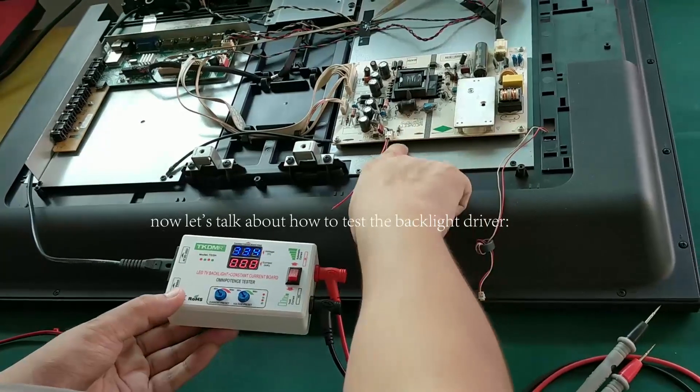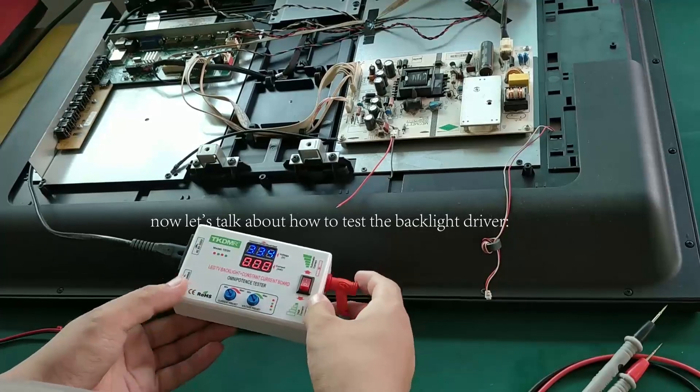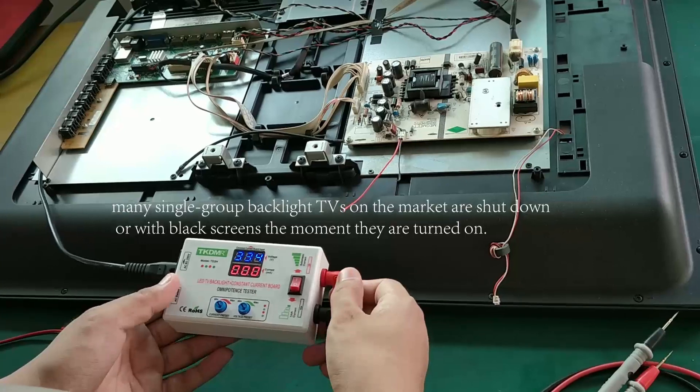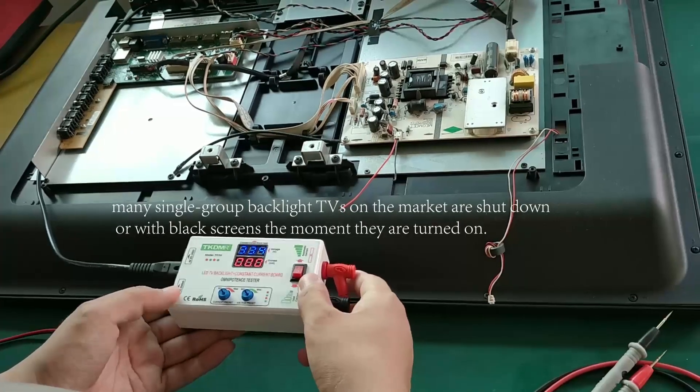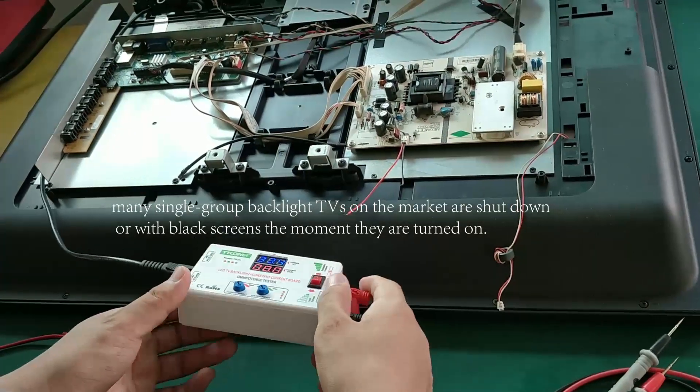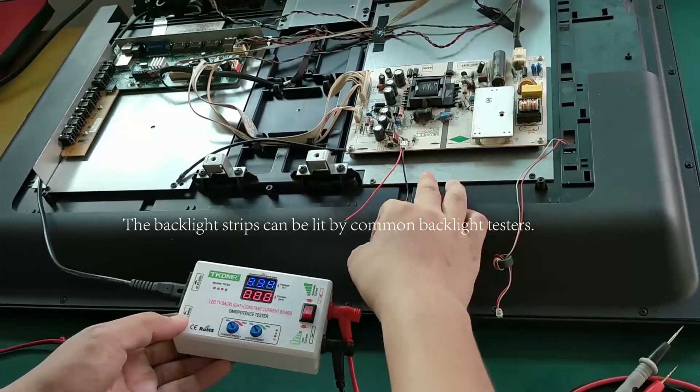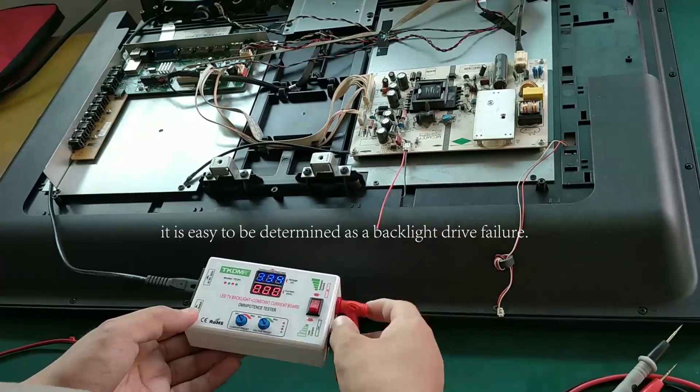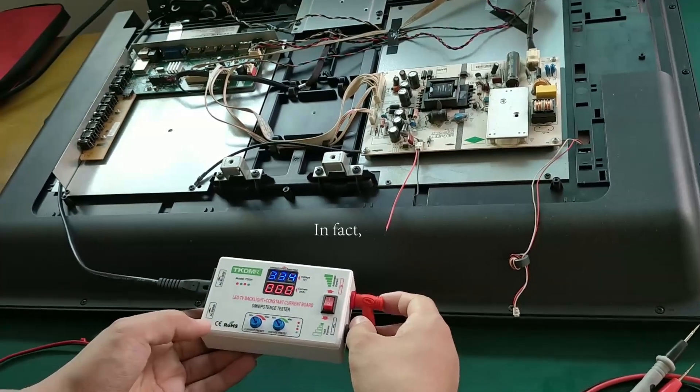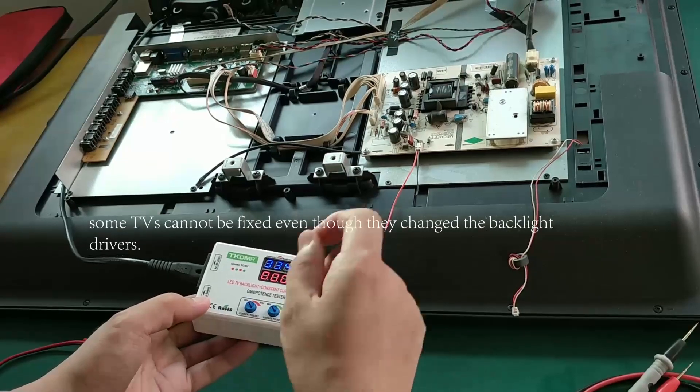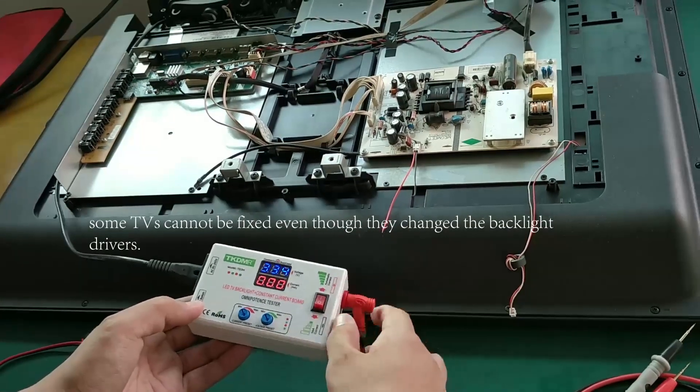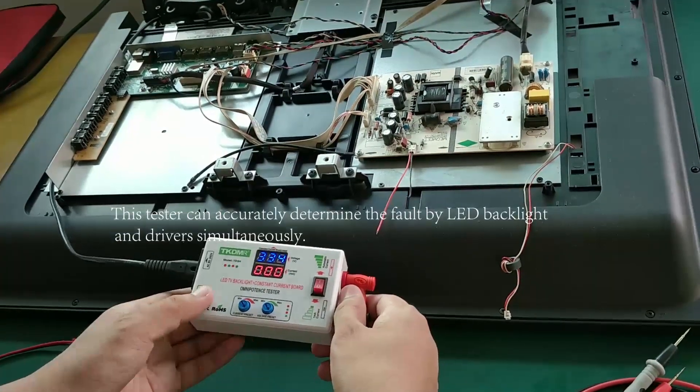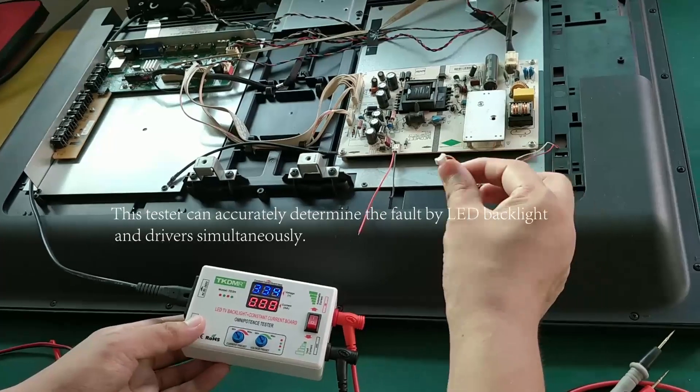Okay, now let's talk about how to test the LED backlight driver. Nowadays, many single group backlight TVs on the market are shut down or with black screens the moment they are turned on. The backlight strips can be lit by common backlight testers. At this point, it is easy to be determined as a backlight drive failure. In fact, some TVs cannot be fixed even though they change the backlight drivers. So what is the problem indeed? This tester can accurately determine the fault by LED backlight and drivers simultaneously.